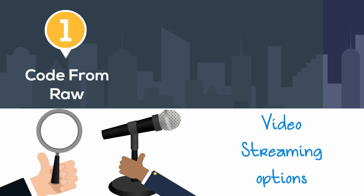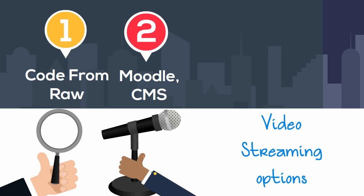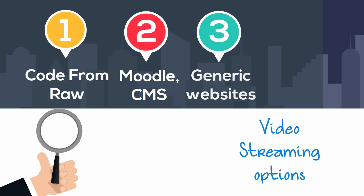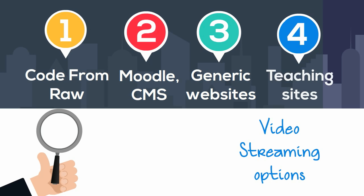First is coding from RAW using languages like PHP, ASP, Java, and Node.js. Second is using open source options like Moodle, WordPress, and Joomla, which require quite a little level of coding. Third is to use ready-to-launch generic website themes from sites like Weebly and Wix. Fourth is to use ready-to-launch teaching template sites like Teachable and Webanywhere.